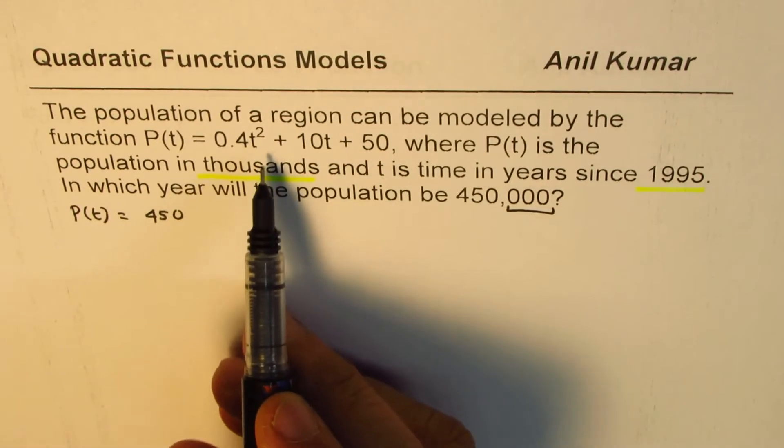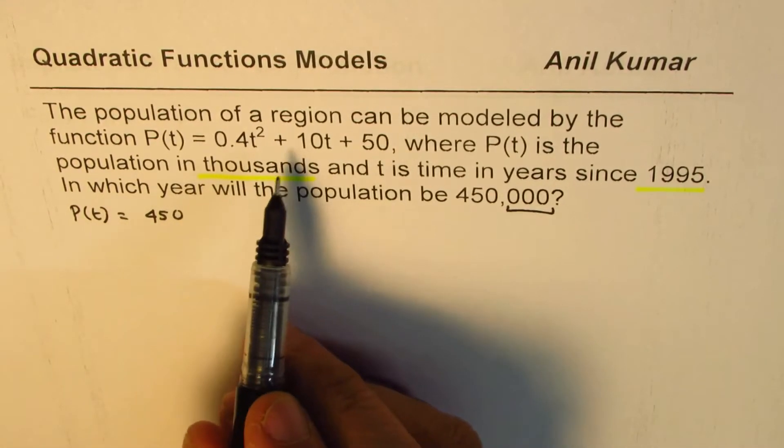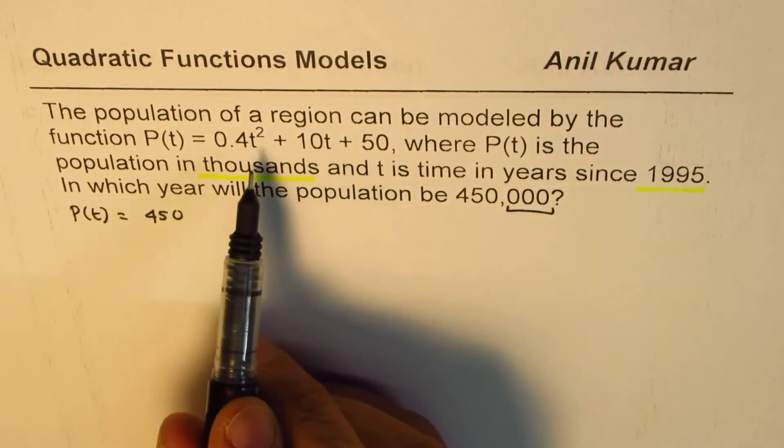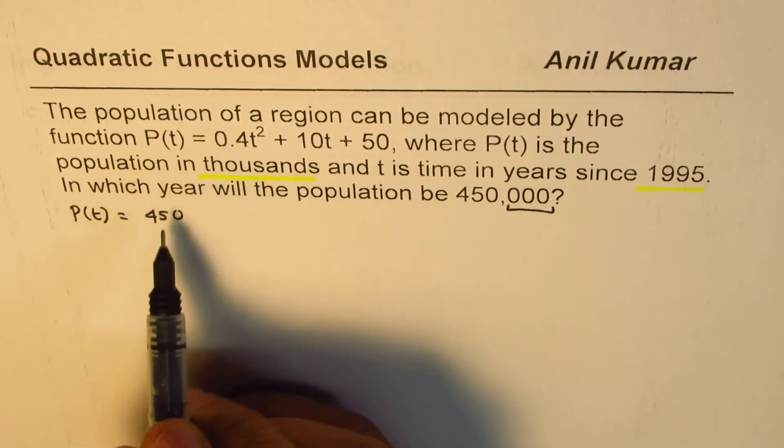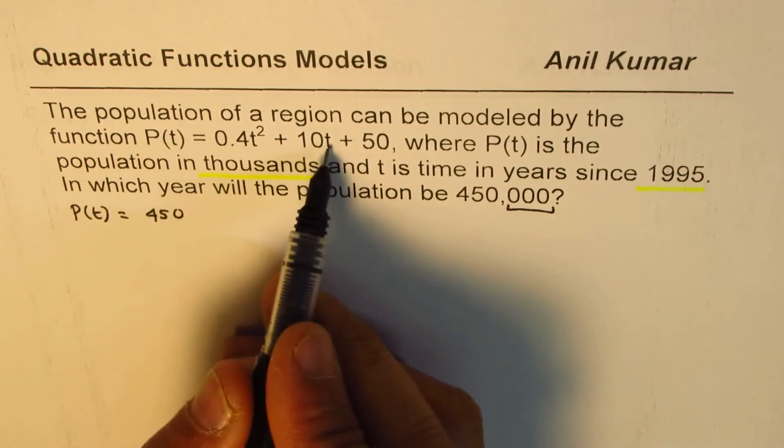So let's just solve this equation for t. We are trying to find the year. First, let's find time years after 1995. So we will equate 450 here and find t.